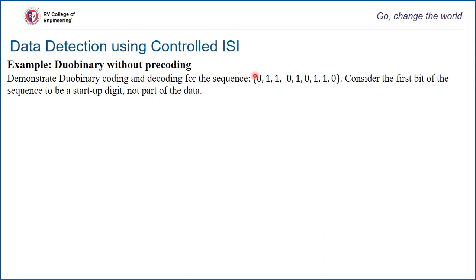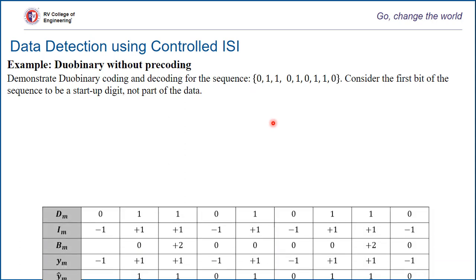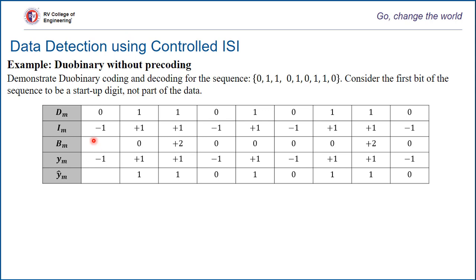We're going to consider the first bit here, which is zero, as the startup digit. This is not part of the data; it's just a reference bit. So dm is the original user data, which is the same as the data sequence mentioned in the question. Im represents the NRZ modulated data — NRZ will have plus 1 or minus 1: plus 1 for bit 1 and minus 1 for bit 0. The second row represents im, the NRZ output: minus 1, plus 1, plus 1, minus 1, and so on.